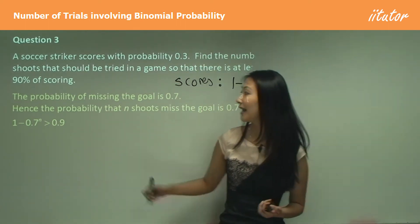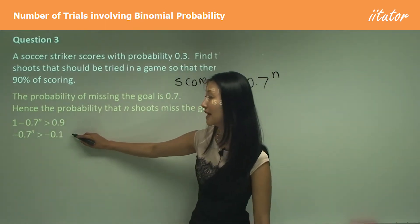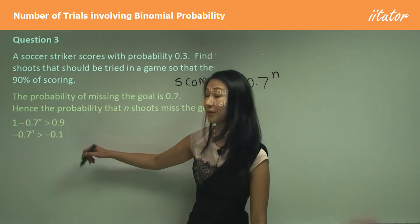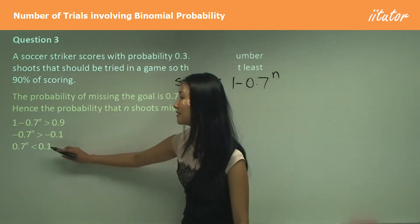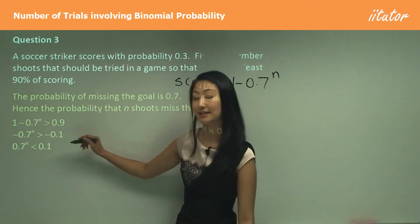The first thing we would do is subtract 1 from this side, so that becomes negative 0.1. Then we can get rid of the negatives, flip the sign: 0.7 to the power of n is less than 0.1.